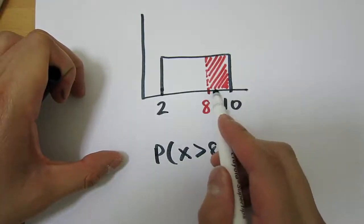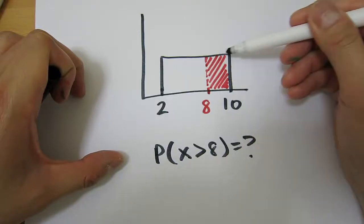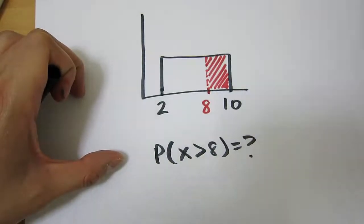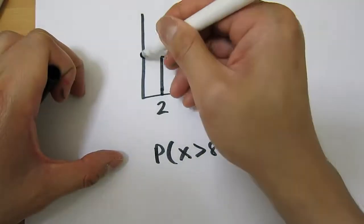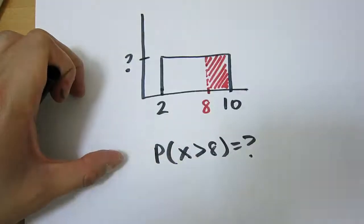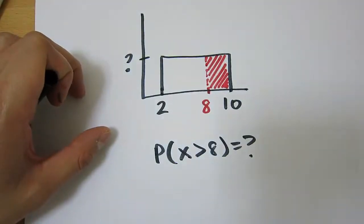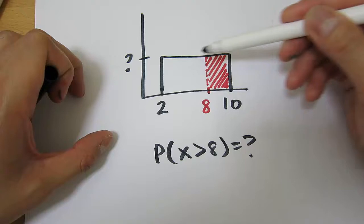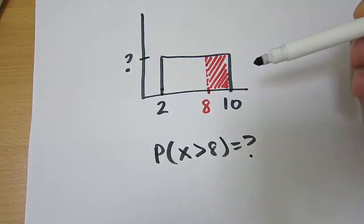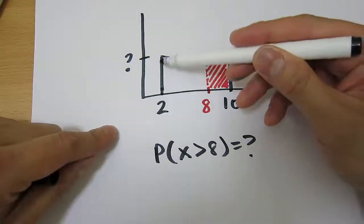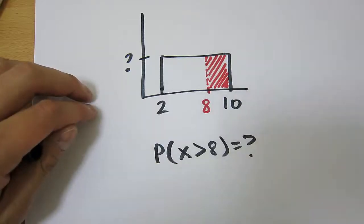So we already have the base of this rectangle here, right? But the trick is we don't have the height, right? So what's the height of this rectangle? Well, I sort of gave it away already, right? I said that the area inside a probability density function must sum to 1.